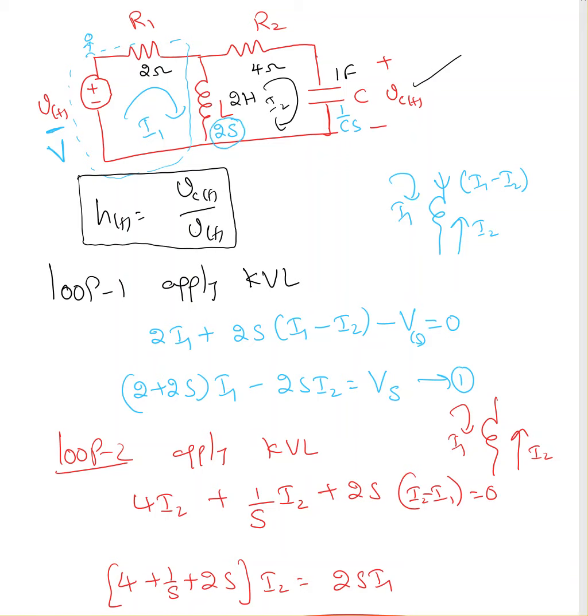And capacitance is going to be 1 over Cs, so 1 over 1 times S, which is 1 over S. Now, I'm going to solve this by using the loop equation.